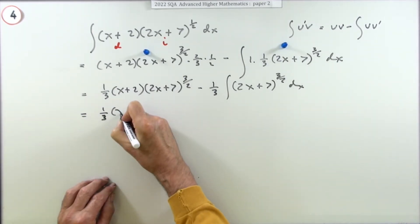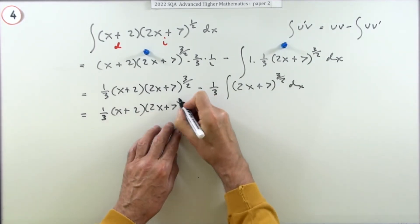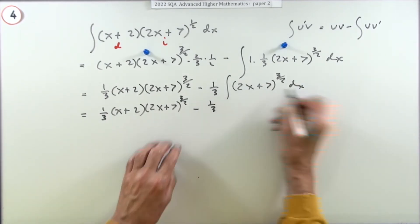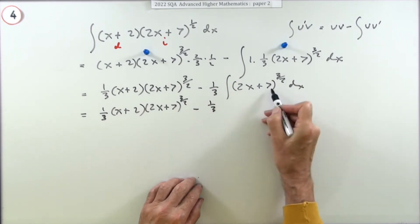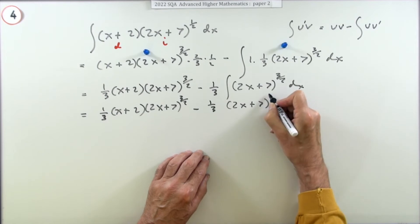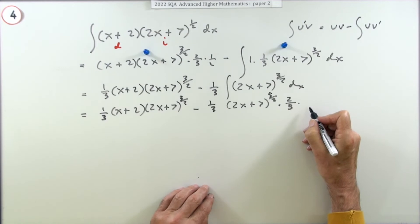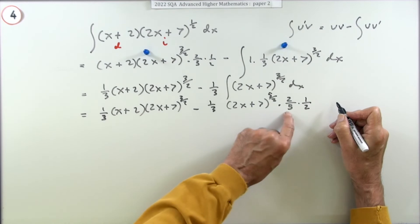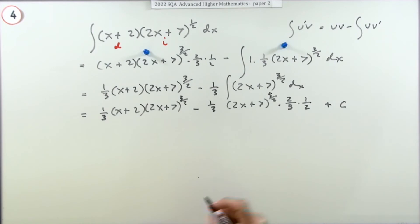So one third of just copy this down: x plus 2, (2x + 7) to the 3 upon 2 minus a third of - now carry that integration because you can just do that by inspection because it's a simple known function of a linear function. So that'll just be the 2x plus 7, add 1 to the power, divide by that new power, also divide by the inner derivative. Now that you've finished all the integrations, there could of course have been some constant lurking about, so it can reappear now.